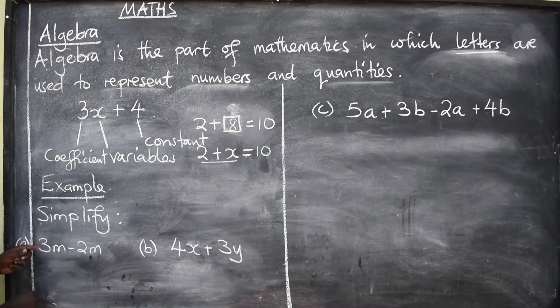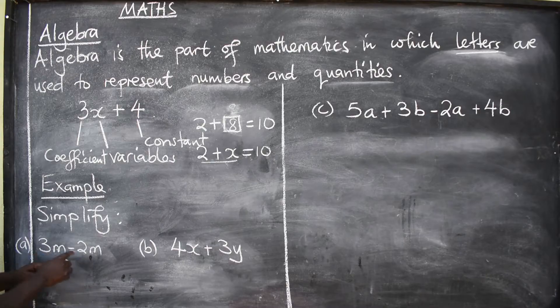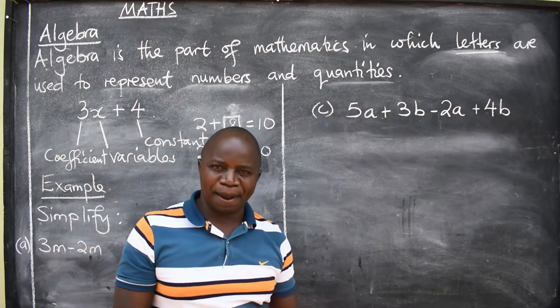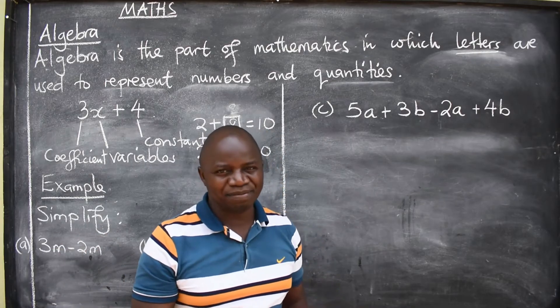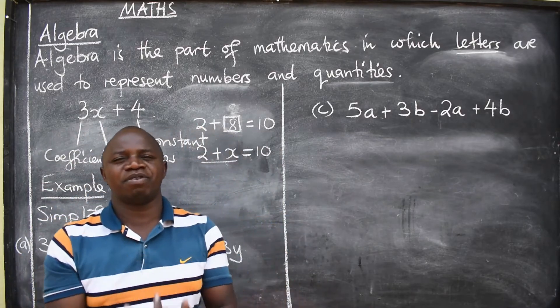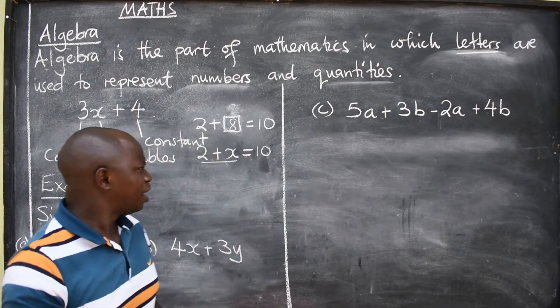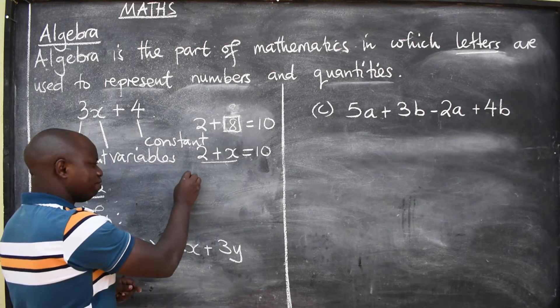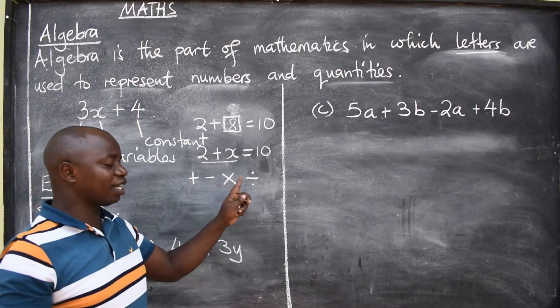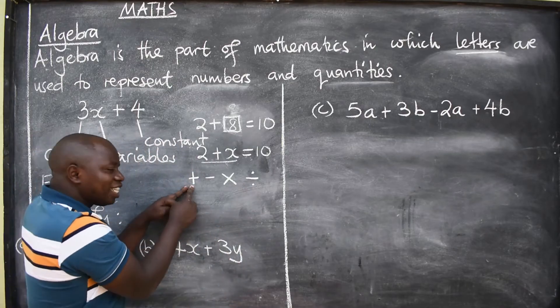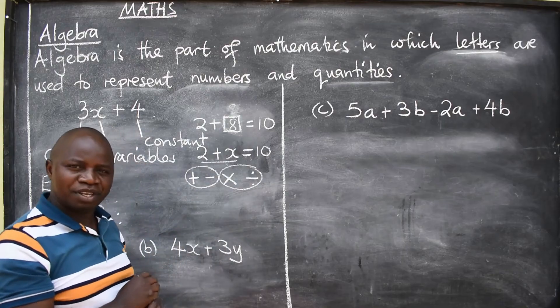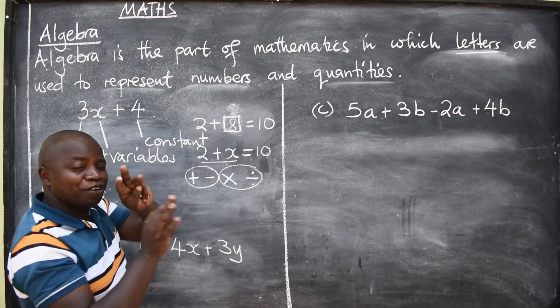Before we can look at one after the other, I want you to understand that there are rules that we follow in simplifying these algebraic expressions. What are these rules? The rules will bear four operations - plus, minus, multiplication, and division. Now, the rules for addition and subtraction are the same. The rules here are not the same as there. So get me very well.